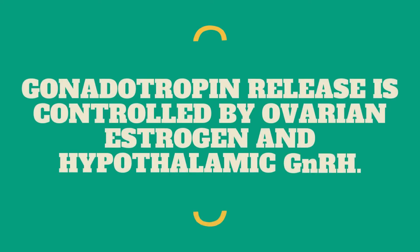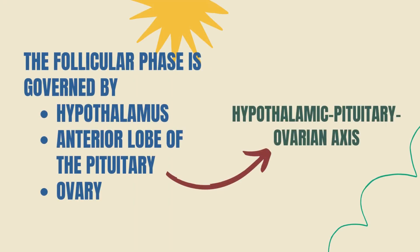Gonadotropin release is controlled by ovarian estrogen and hypothalamic GnRH. The follicular phase is governed by the hypothalamus, the anterior lobe of the pituitary, and the ovary through the secretion of estradiol in the absence of progesterone. This is also known as the hypothalamic-pituitary-ovarian axis.